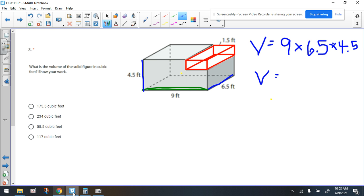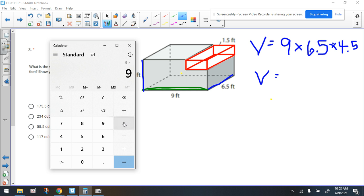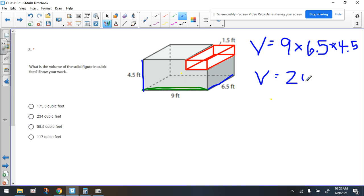All right, so let's get out our calculators. We're going to multiply nine times 6.5 times 4.5. And we get this number, which is probably a choice, by the way. Actually, I'm surprised that it's not a choice. So 263 and 45 hundredths. But again, that's not the answer, folks.